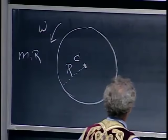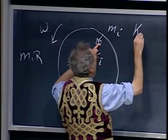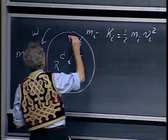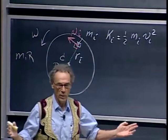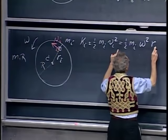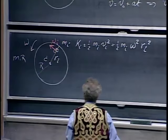I take a little mass element m-sub-i at radius r-sub-i. The kinetic energy of that element alone equals one-half m-sub-i times v-sub-i squared. Since v equals omega r always holds for rotating objects, I prefer to write this as one-half m-sub-i omega-squared r-sub-i squared. The nice thing is that omega, the angular velocity, is the same for all points of the disk, whereas the velocity is not — the velocity of a point close to the center is very low, and here it is very high.